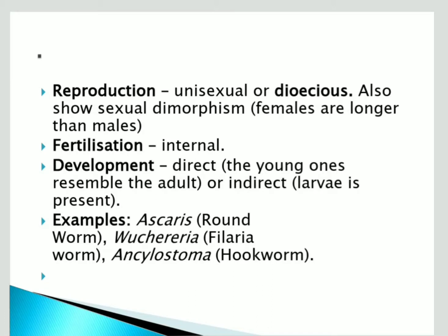Development is direct, meaning they directly produce young ones, or indirect with larvae present. Examples include Ascaris, which is a roundworm, Wuchereria, the filarial worm, and hookworm. These organisms show the different characters of this phylum.